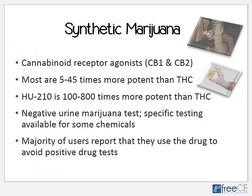These compounds act on cannabinoid receptors. They're agonists at cannabinoid receptor 1 and cannabinoid receptor 2. Most of them are 5 to 45 times more potent than THC, which is the active ingredient in marijuana. HU-210 in particular is somewhere between 100 to 800 times more potent than THC. They don't contain THC, so typical urine drug screens will come up negative when testing for marijuana. Studies have shown that the majority of users report that they particularly use the drug to avoid positive drug tests.